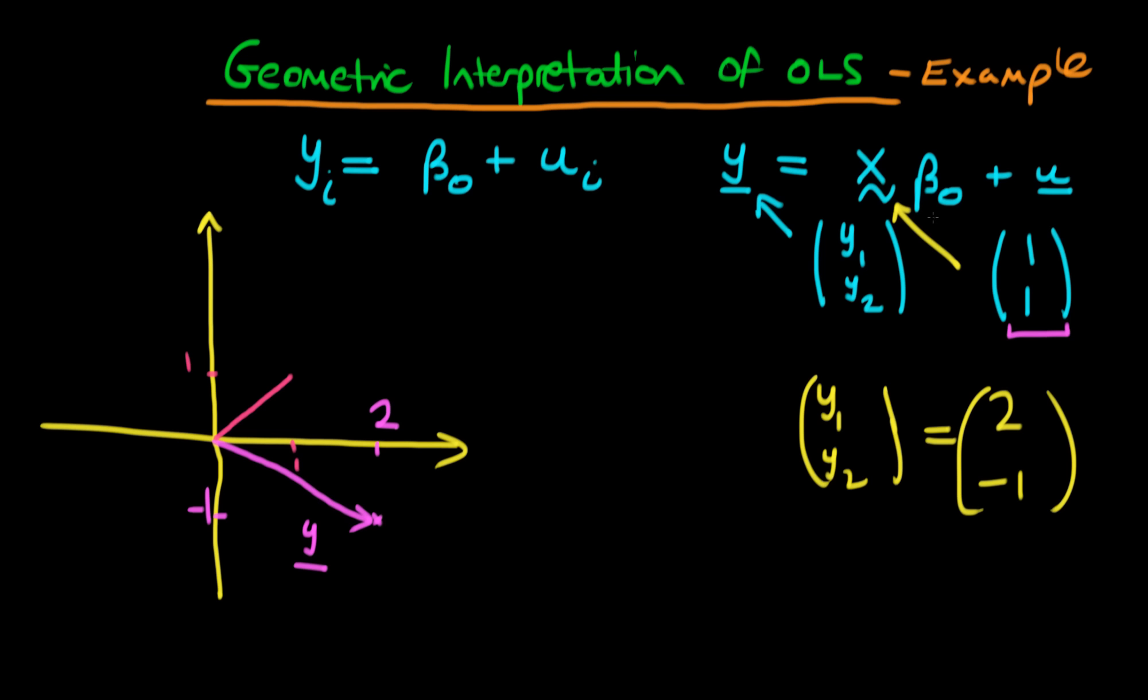But essentially what we're doing is beta 0. The role of beta 0 here is either to increase the length of this vector, so to extend it out that way if beta 0 is greater than 1. Or if beta 0 is less than 0, then it's going to flip sign, so it can also go anywhere in the sort of opposite direction as well. So the column space of our independent variables in this example is really just a line. It's a one dimensional line because we've only got one independent variable.